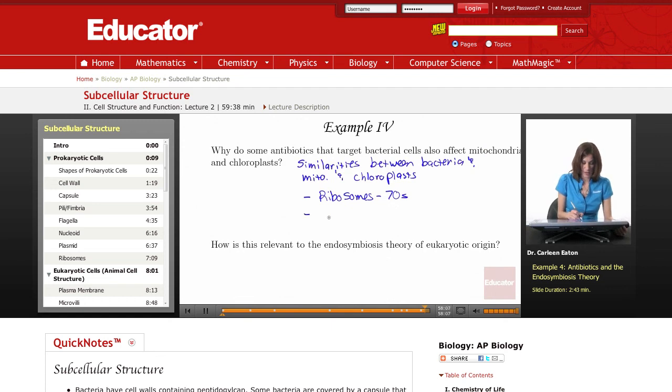Other similarities, remember, are the DNA. It is circular. The DNA of mitochondria, bacteria, and chloroplasts are all circular.